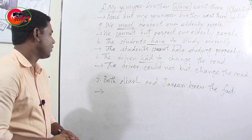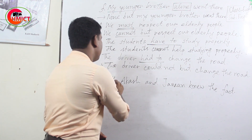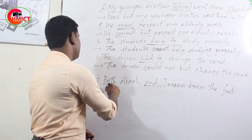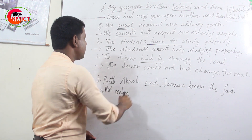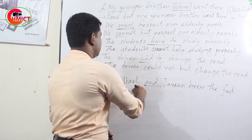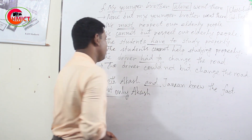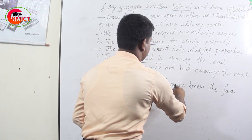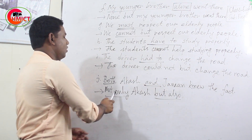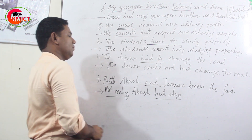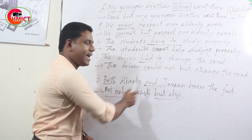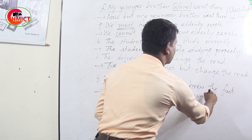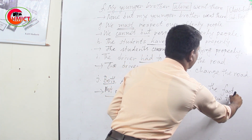Now sentence J: 'Both Akash and Jaman knew the fact.' Here we have to use 'not only' at the place of 'both', and 'but also' at the place of 'and'. So the negative sentence will be: 'Not only Akash but also Jaman knew the fact.'